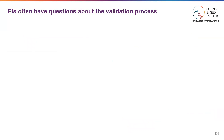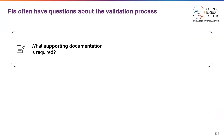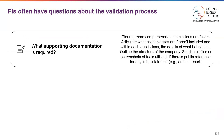There are a number of questions FIs often have, so we focus on three of the most common ones here. First, what supporting documentation is required? Clear, more comprehensive submissions are faster. It's important to articulate what asset classes are and aren't included and, within each asset class, the details of what is included. Outline the structure of the company. Send in all files or screenshots of tools utilized. If there is a public reference to any of the info, link to that — for example, an annual report.